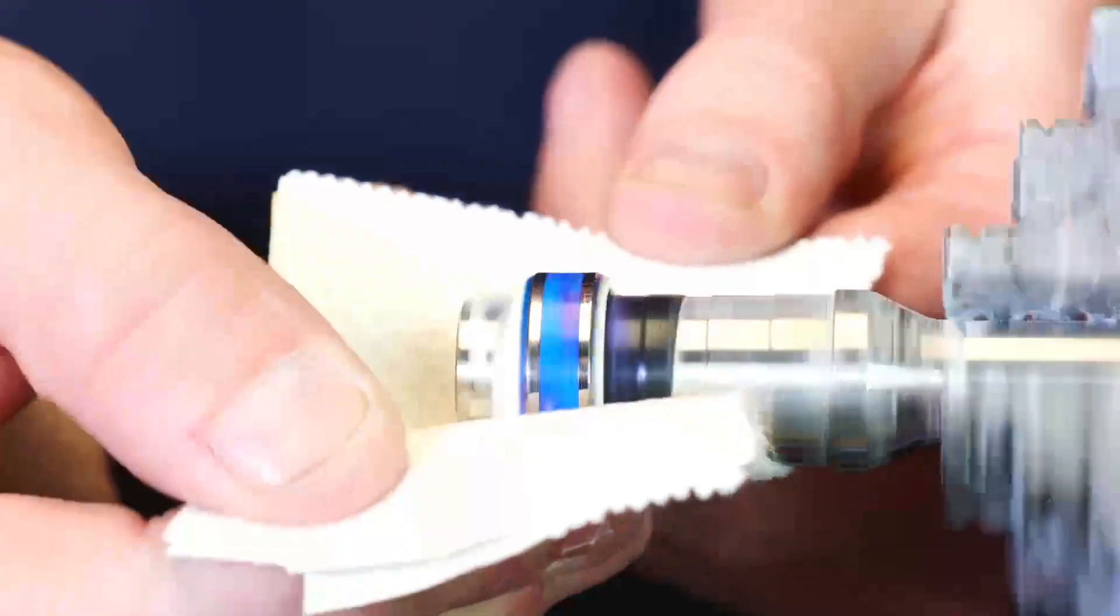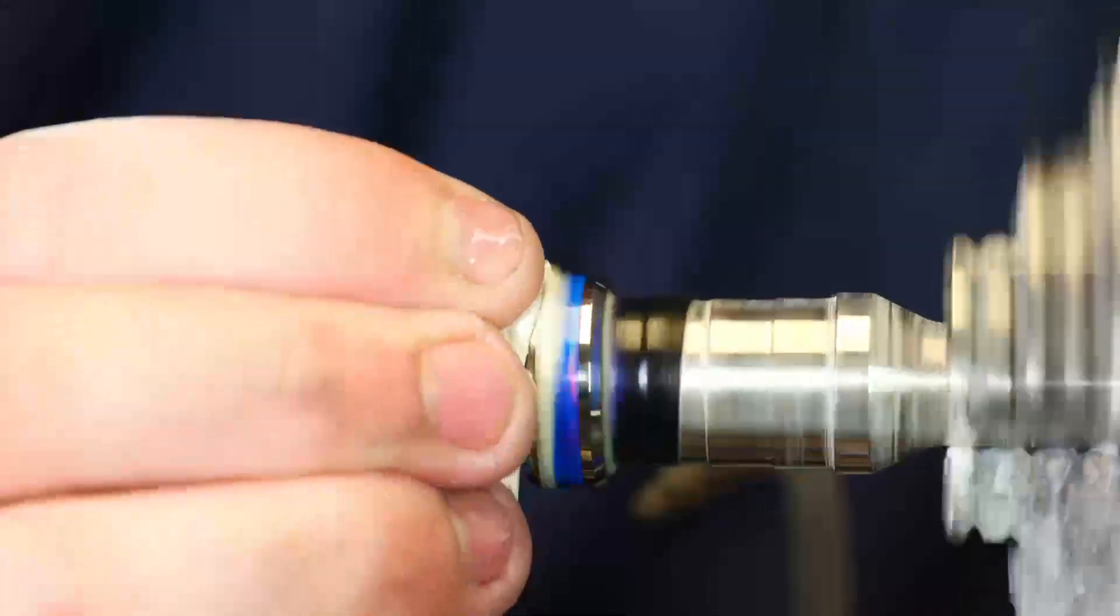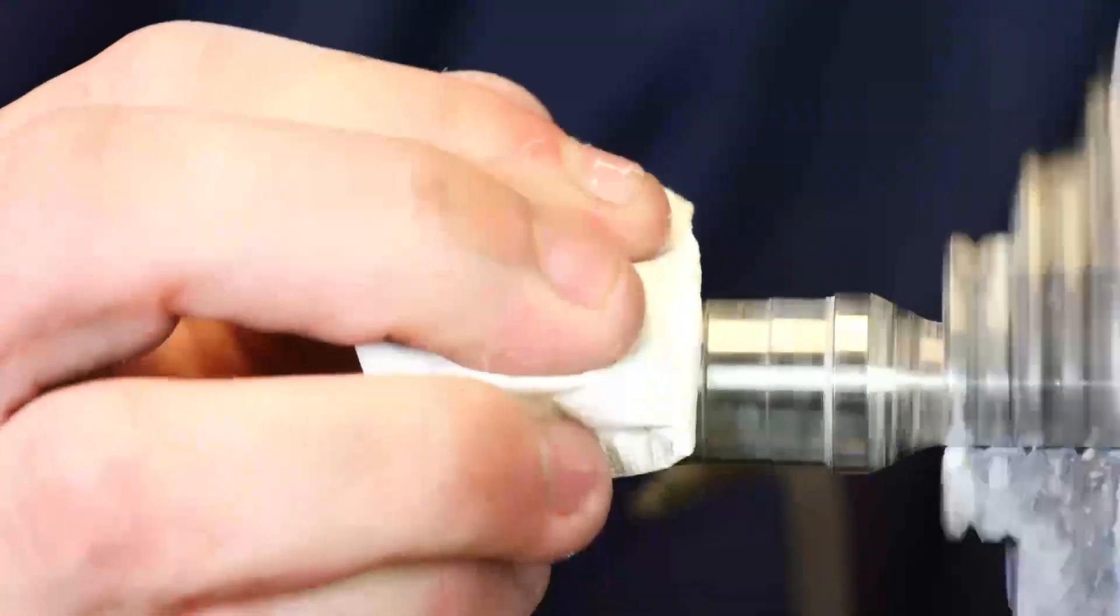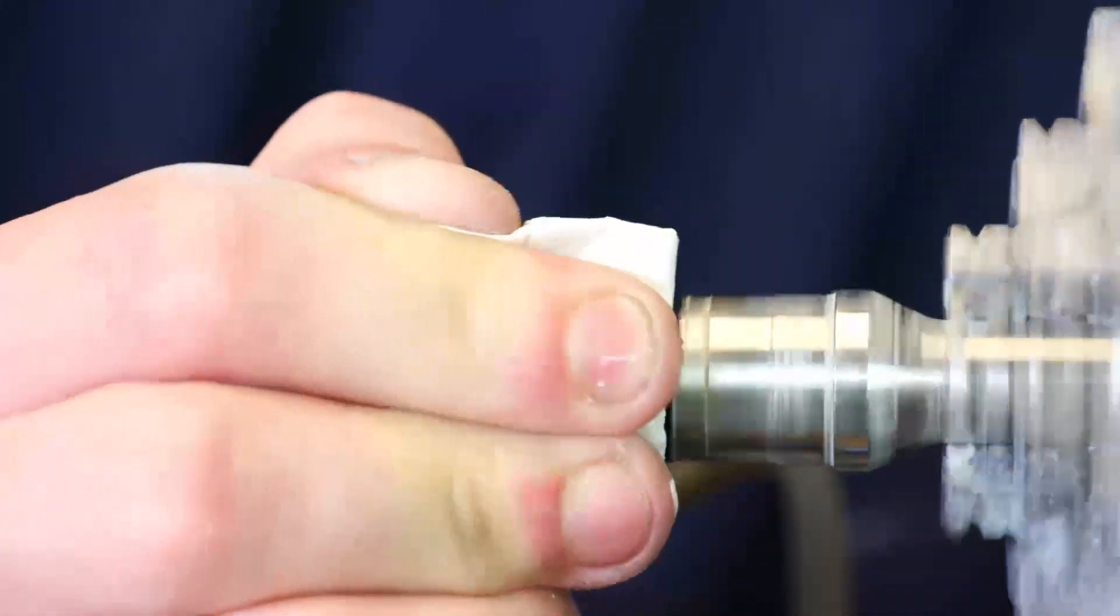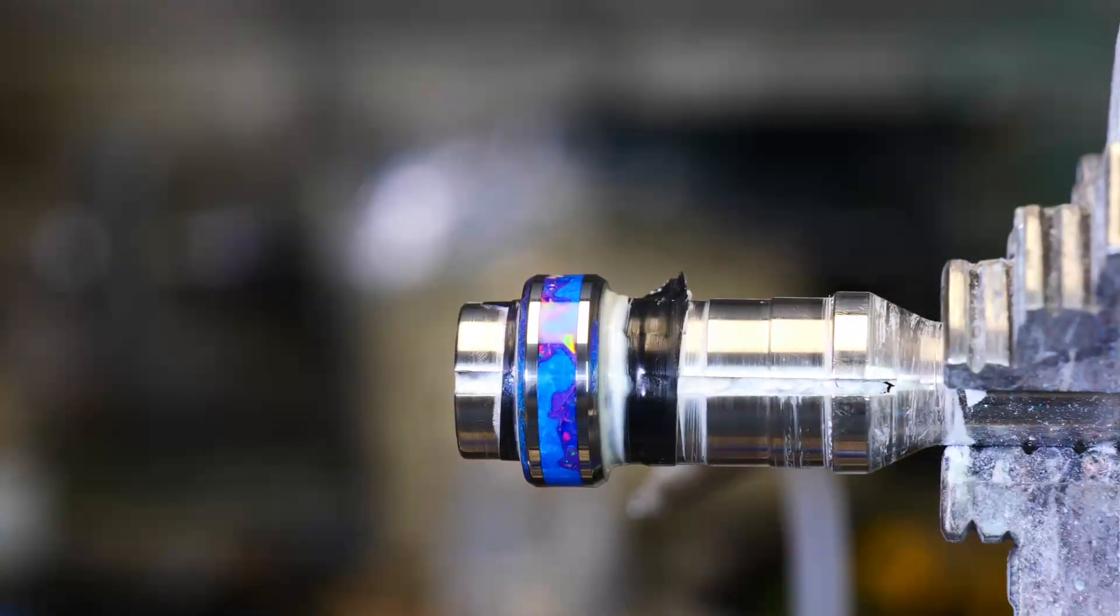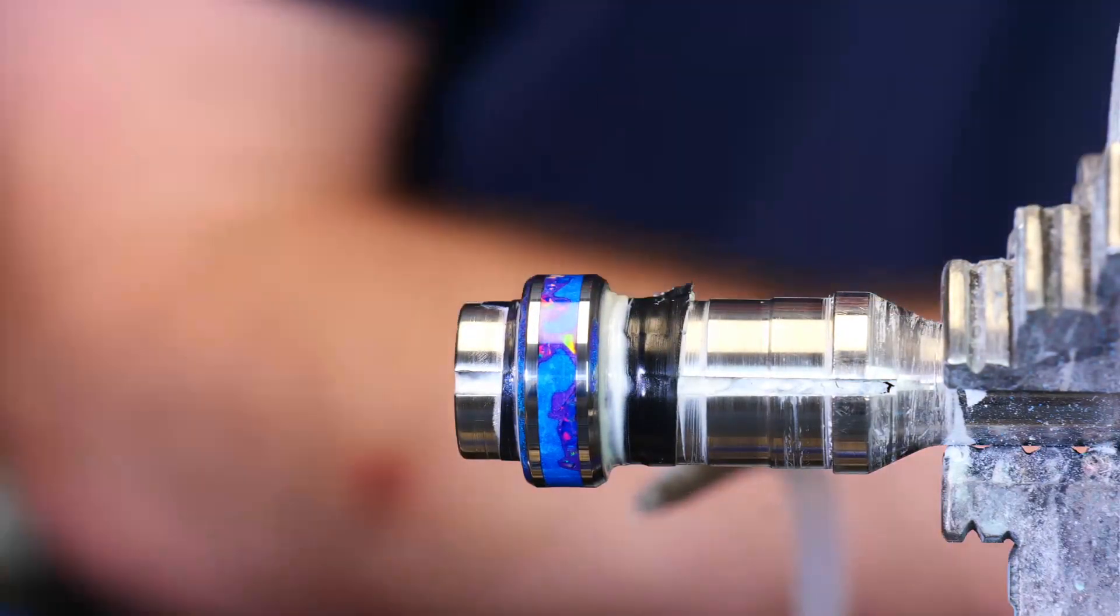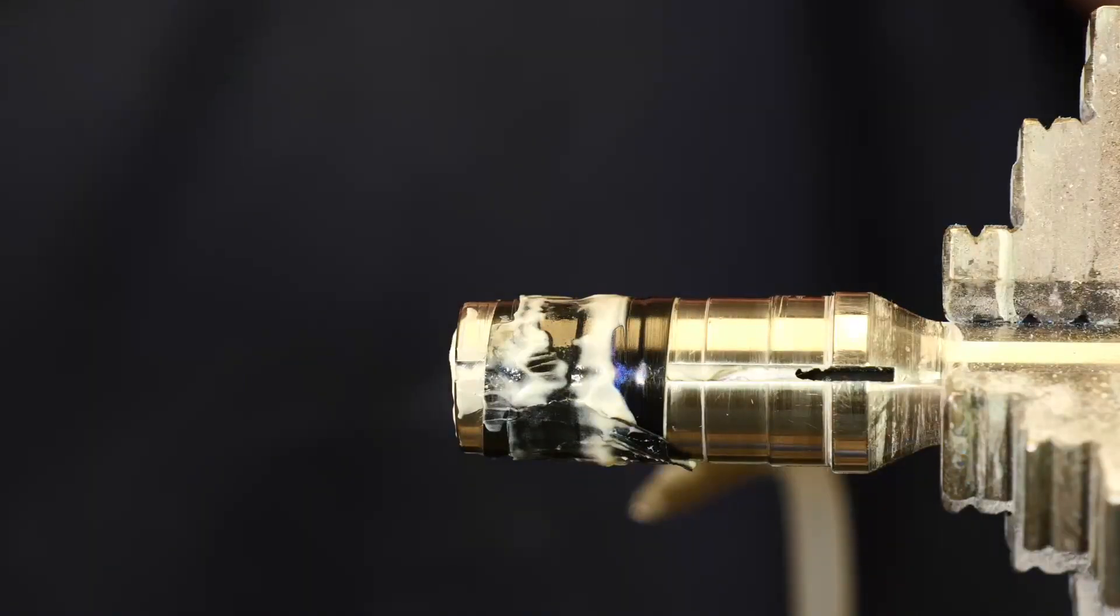After I finished sanding it, I went ahead and polished the ring up. For this one, I used our Step 2 diamond paste polish. I really like to use diamond paste polish, especially when I'm working with tungsten. I feel like it does a really good job of bringing all of the shine back to my ring. Sometimes when you're working with tungsten, you can scratch it up a little bit, just depending on how rough you were with the sanding. I feel like the diamond paste polish really helps bring back that full shine. So I always like to use that when I'm working with tungsten.